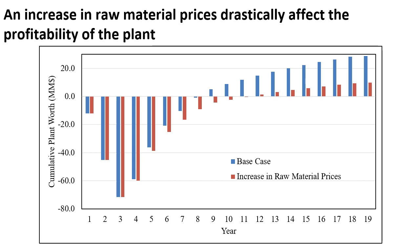An increase in raw material prices drastically affects the profitability of the plant. The price of the benzene and propylene feed streams were increased until an ATROR of 15% was achieved. When increasing the price of raw materials, the cumulative plant net worth decreased by $18.9 million at the end of the plant's operation, and the increased material prices take the plant four extra years to be paid off. The plant is not recommended if prices of raw materials are expected to increase.